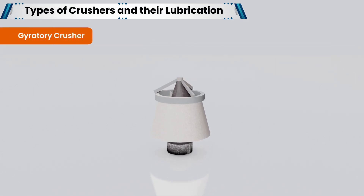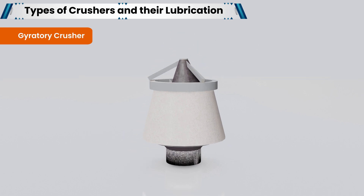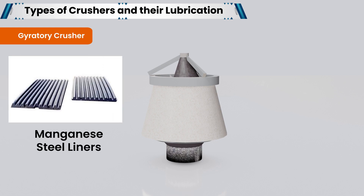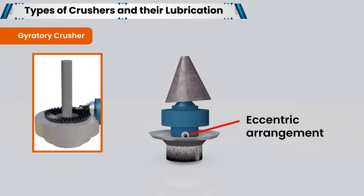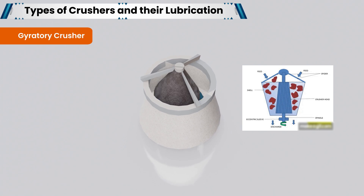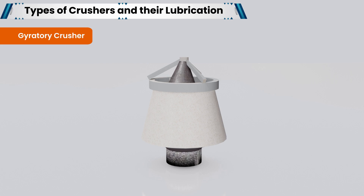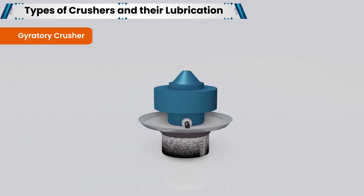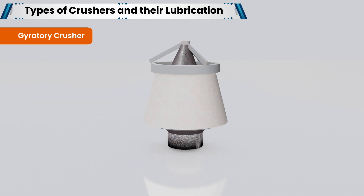A gyratory crusher is similar in concept to a jaw crusher, consisting of a concave surface and a conical head, with both surfaces typically lined with manganese steel liners. The inner cone has a slight circular movement but does not rotate; the movement is generated by an eccentric arrangement. The crushing action is caused by the closing of the gap between the mantle line — movable, mounted on the central vertical spindle — and the concave liners — fixed, mounted on the main frame. The gap is opened and closed by an eccentric on the bottom of the spindle that causes the central vertical spindle to gyrate, and the vertical spindle is free to rotate around its own axis.